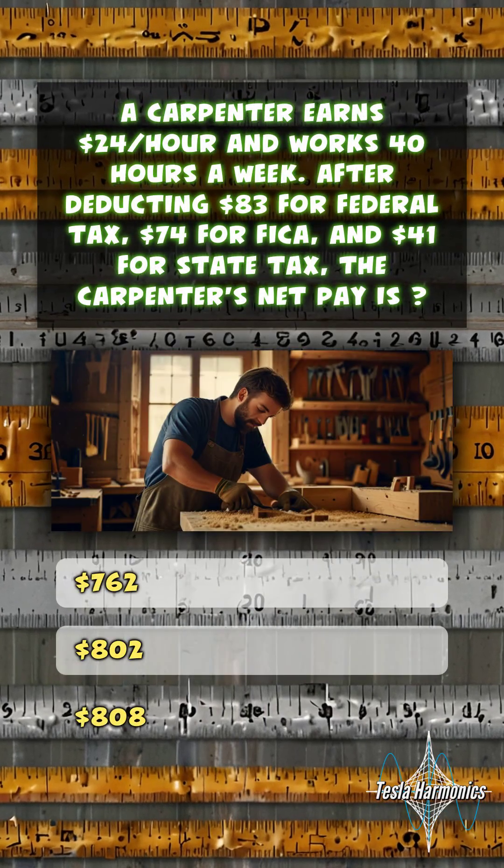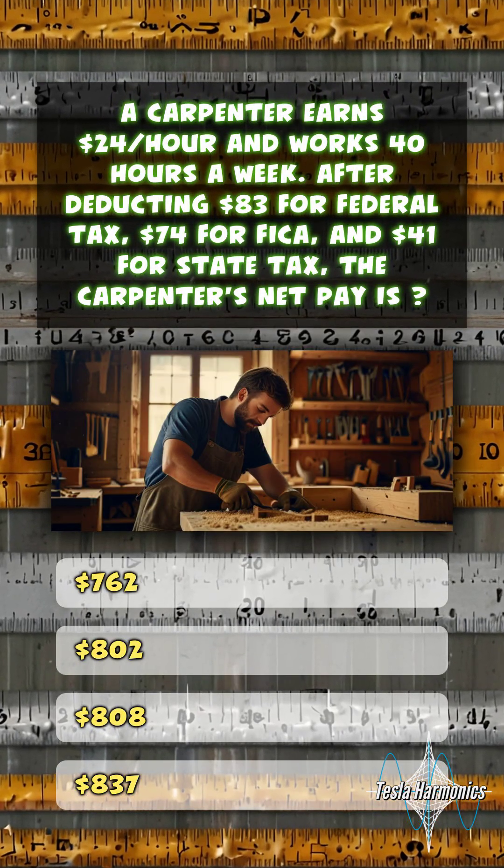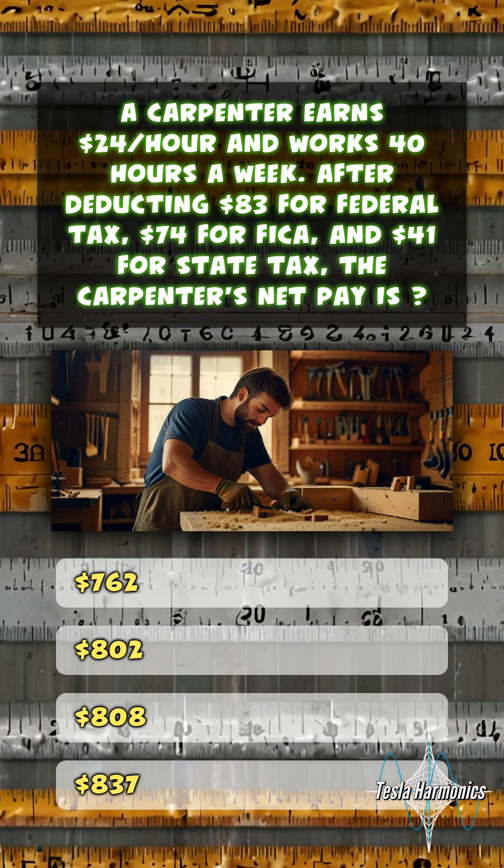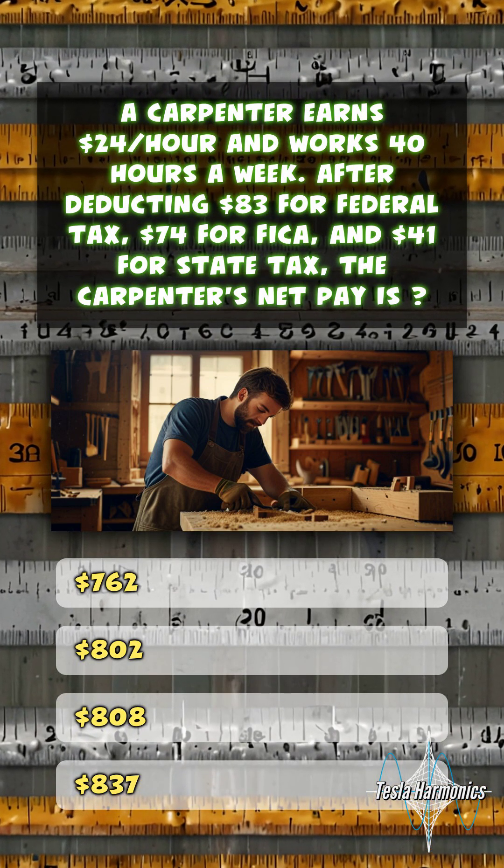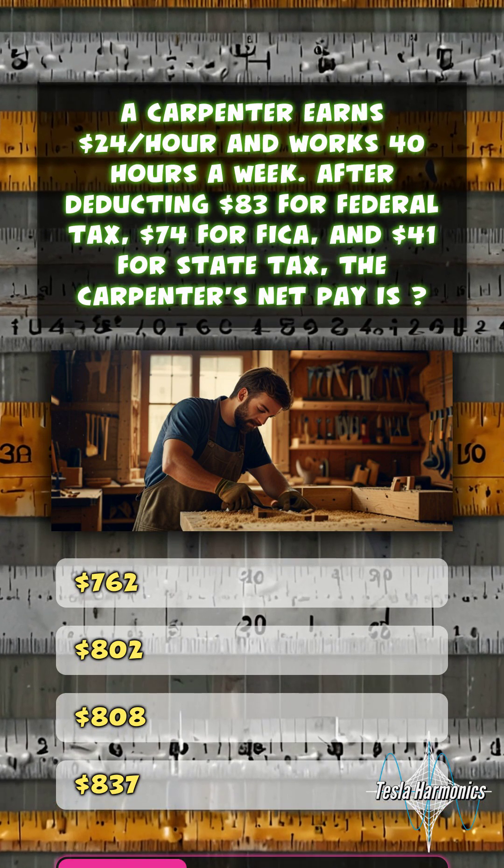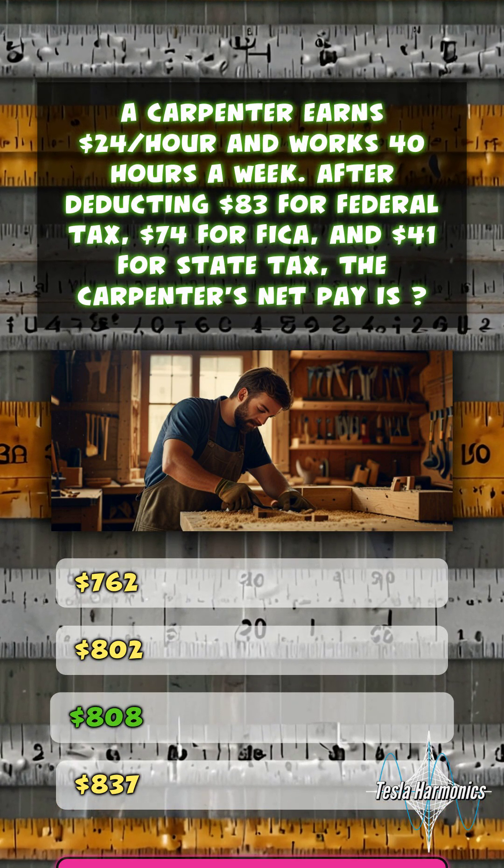A carpenter earns $24 per hour and works 40 hours a week. After deducting $83 for federal tax, $74 for FICA, and $41 for state tax, the carpenter's net pay is $808.